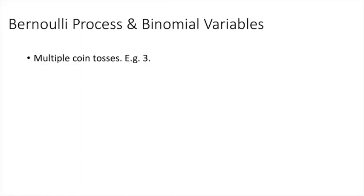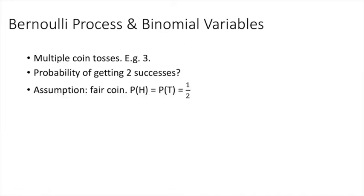Sometimes we can do multiple Bernoulli trials in succession. Doing n Bernoulli trials in succession is called a Bernoulli process. For example, we toss a coin multiple times and we want to see two successes. Essentially, the question is: what is the probability of observing two successes? Now assume that this is a fair coin — that is, the probability of observing a head equals the probability of observing a tail, which is one-half.